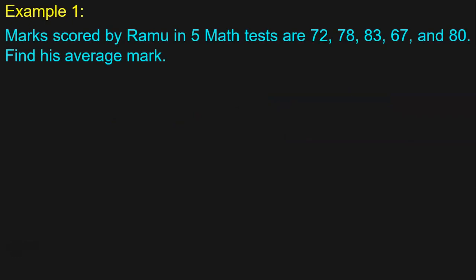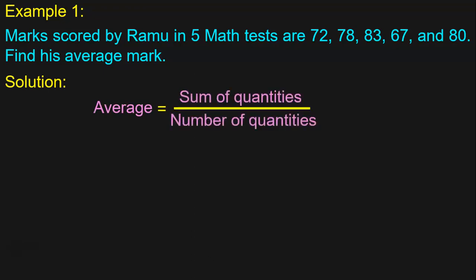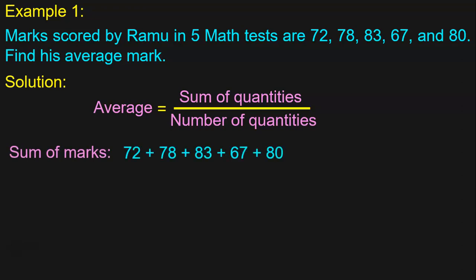Marks scored by Ramu in 5 math tests are 72, 78, 83, 67, and 80. Find his average mark. The first step in the solution is to always write down the formula. Average is equal to sum of quantities by number of quantities. Here, the quantities given are 5 math test marks, so we will have to find out the sum of the marks first: 72 plus 78 plus 83 plus 67 plus 80. Let us do vertical addition to find out the sum of these numbers.